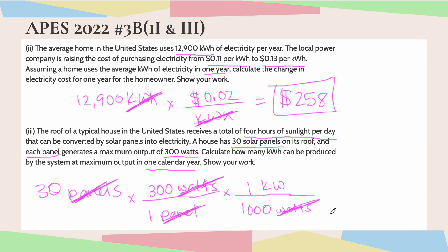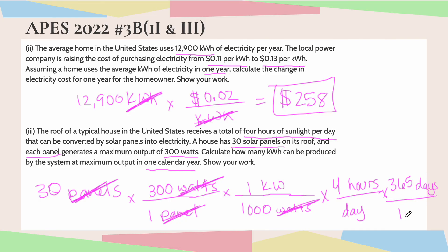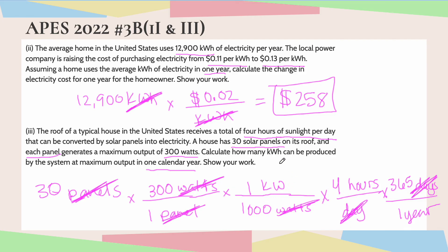We also know that there are four hours of sunlight per day, so now we're in kilowatt hours per day — but we need how many are in one calendar year. We do one more conversion: there are 365 days in one year, and we cancel out days. Now we are in kilowatt hours per year. Kilowatt hours are literally kilowatts times hours, and that's how I knew to put both kilowatts and hours in the numerator.